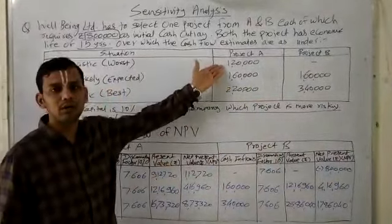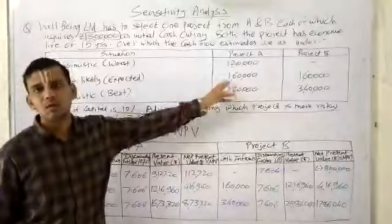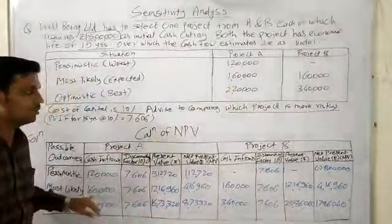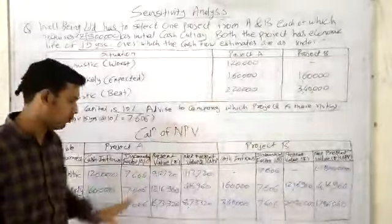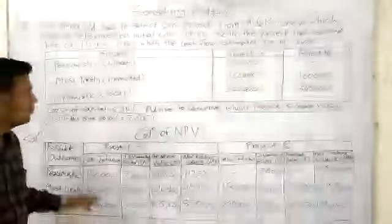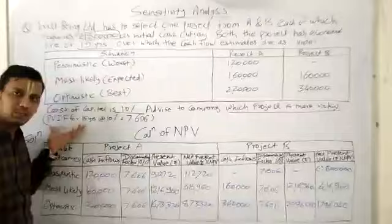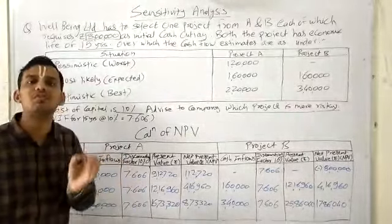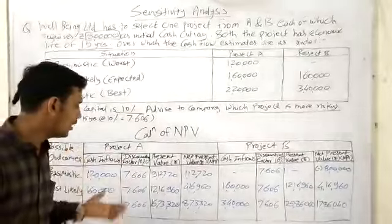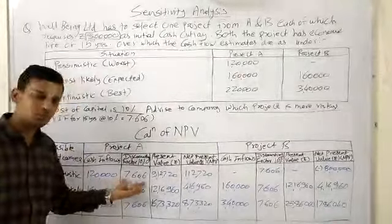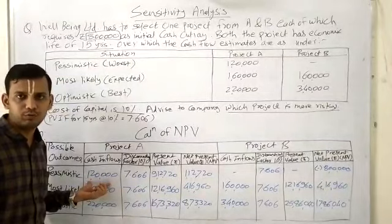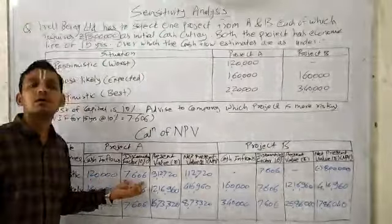Cash inflows already mentioned in the problem for Project A: 1,20,000 for pessimistic approach, 1,60,000 for most likely, and 2,20,000 for optimistic. PVIF already provided in the question is 7.606 for 15 years cumulative. We have taken direct cumulative value because cash inflows are equal for all 15 years.